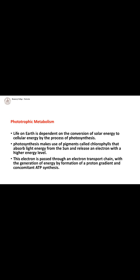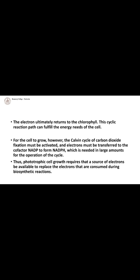Phototrophic metabolism involves the conversion of solar energy to cellular energy, which is photosynthesis. The photosynthesis process uses pigments called chlorophyll to absorb light energy from the sun, releasing electrons to a higher energy level. These electrons pass through the electron transport chain, generating energy by the proton gradient and concomitant ATP synthesis.